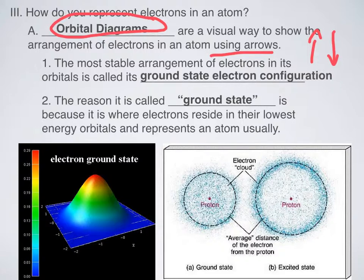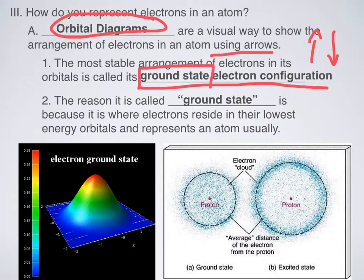Before we actually go over how to make any of these diagrams or the important properties of them, we have to talk about a couple of important definitions. So the first is called a ground state electron configuration. That sounds kind of confusing, but it's the most stable arrangement of electrons in an atom's orbitals, and we call that the ground state electron configuration because ground state is where electrons reside in their lowest energy orbitals, and it represents an atom as it appears normally.